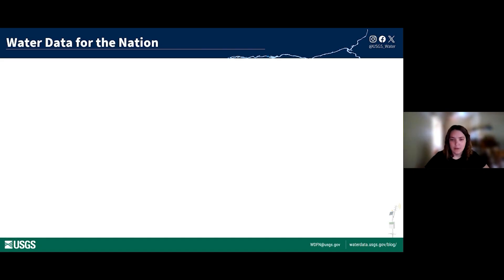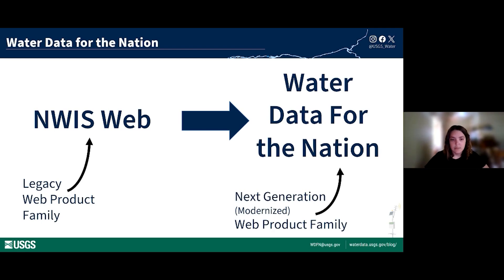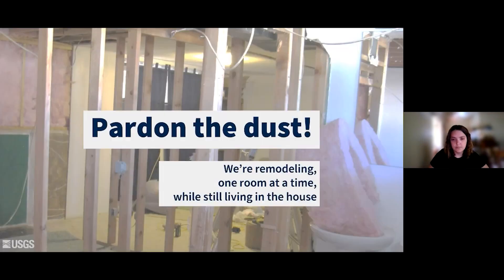If you've seen our team present before, you know we are leading the modernization of the National Water Information System, or NWIS Web, which hosts our legacy web products that have been around for decades, delivering crucial water data to everyone. We are gradually replacing this outdated web presence with modernized data delivery products hosted by Water Data for the Nation. Modernization is like a house renovation — we are busy remodeling one room at a time while still living in the house. Thank you all for your patience and feedback as we move through this process together.